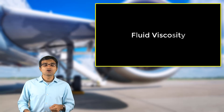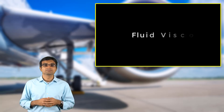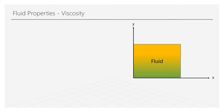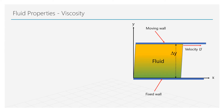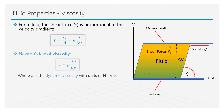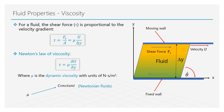Fluid viscosity is the measure of resistance offered by the fluid. Imagine the fluid between two parallel plates separated by a distance delta y. The shear stress applied on the fluid is proportional to the velocity gradient of the fluid. This proportionality holds at every point in the fluid and its constant is called the dynamic viscosity of the fluid. This well-known relationship is known as Newton's law of viscosity. For most fluids, viscosity is a constant and such fluids are called Newtonian fluids.